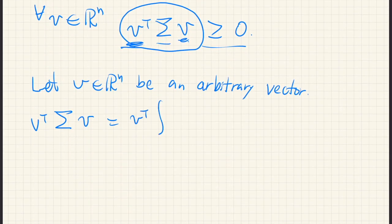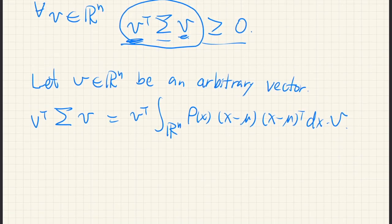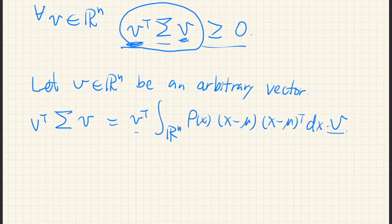So we multiply v transpose sigma v. And so we just apply this definition of covariance matrix. So v transpose integral rho of x, x minus mu, x minus mu transpose dx times v.